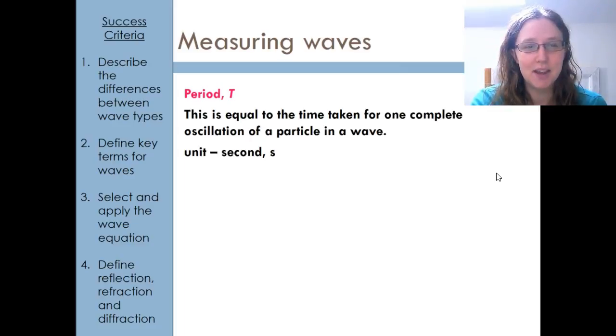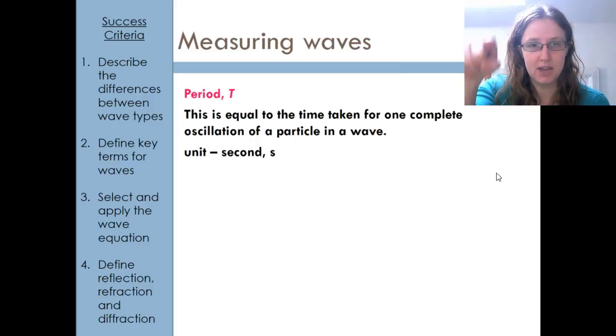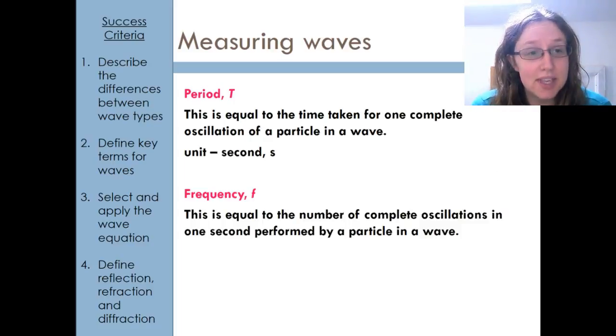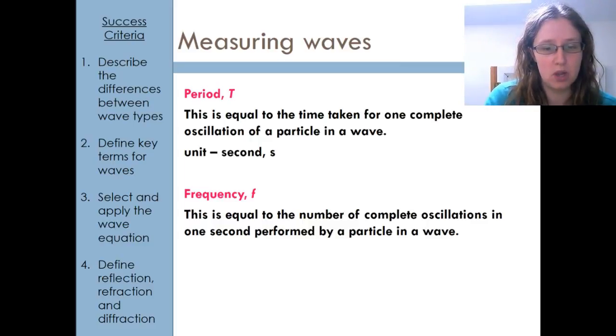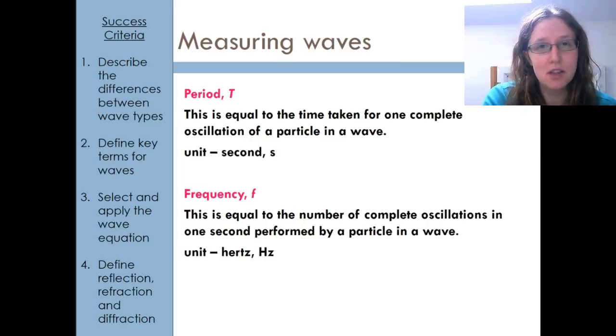Okay, next thing we need to talk about is time period. That's the time it takes for one complete oscillation of a particle in a wave. So, time it takes for a particle to go up, down, back to the middle. And that's measured in seconds. That is frequency. And that is equal to the number of complete oscillations completed in one second by a particle in the wave. So, how many times in one second does a particle do a full oscillation? That's measured in hertz. That's its SI unit. Its base unit would be seconds to the minus one.